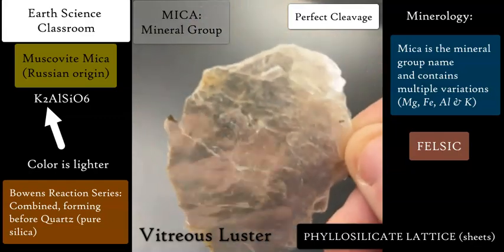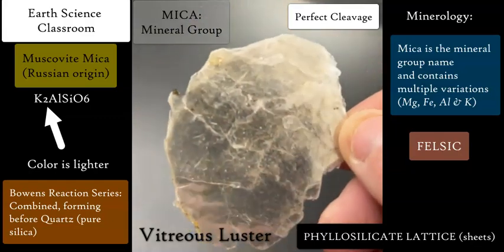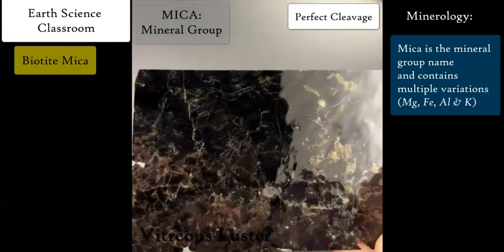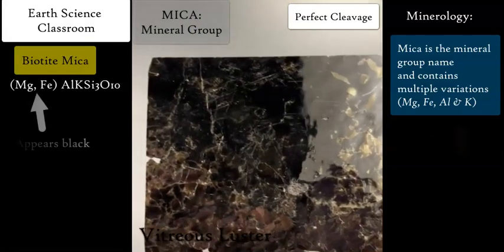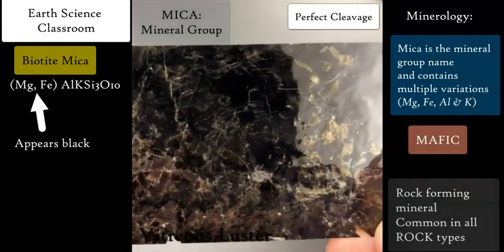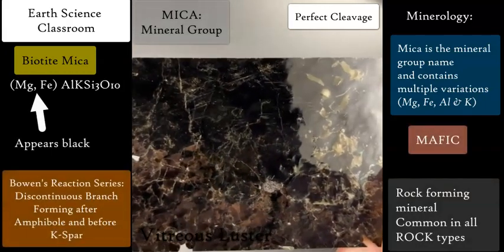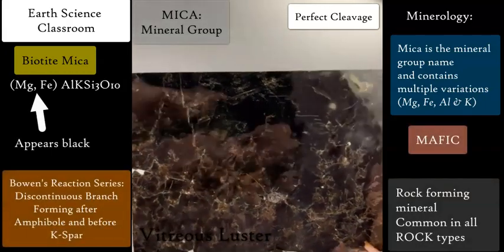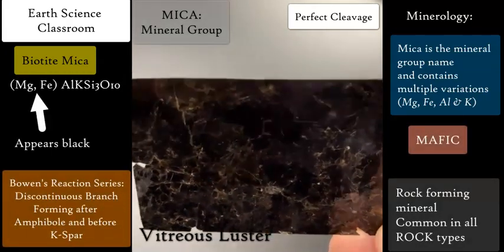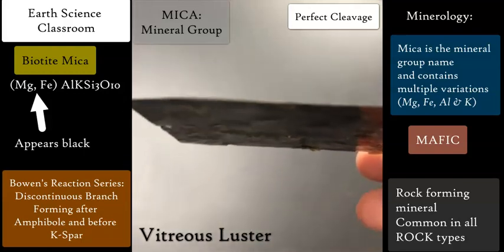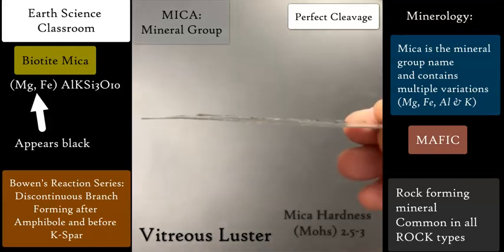It forms before quartz in the Bowen's reaction series. This is the biotite version, and it's black due to the addition of magnesium and iron into the chemical formula, in addition to the potassium, aluminum, silicon, and oxygen.